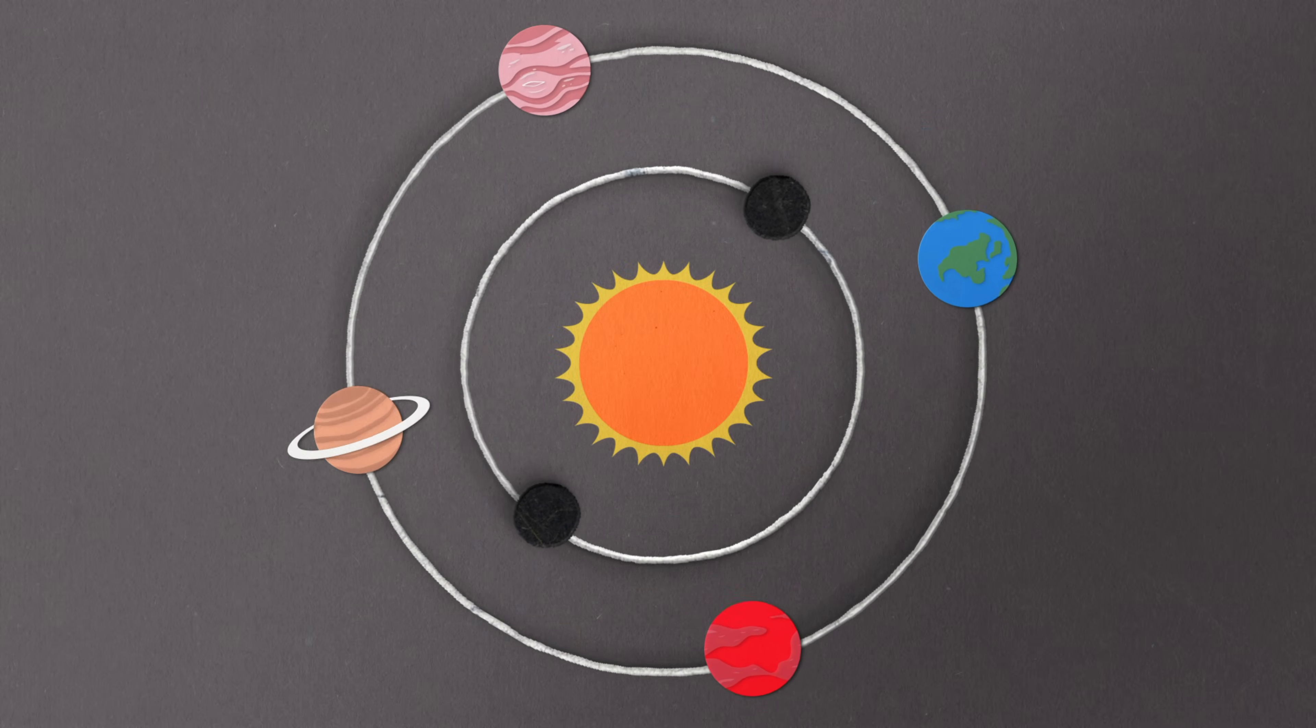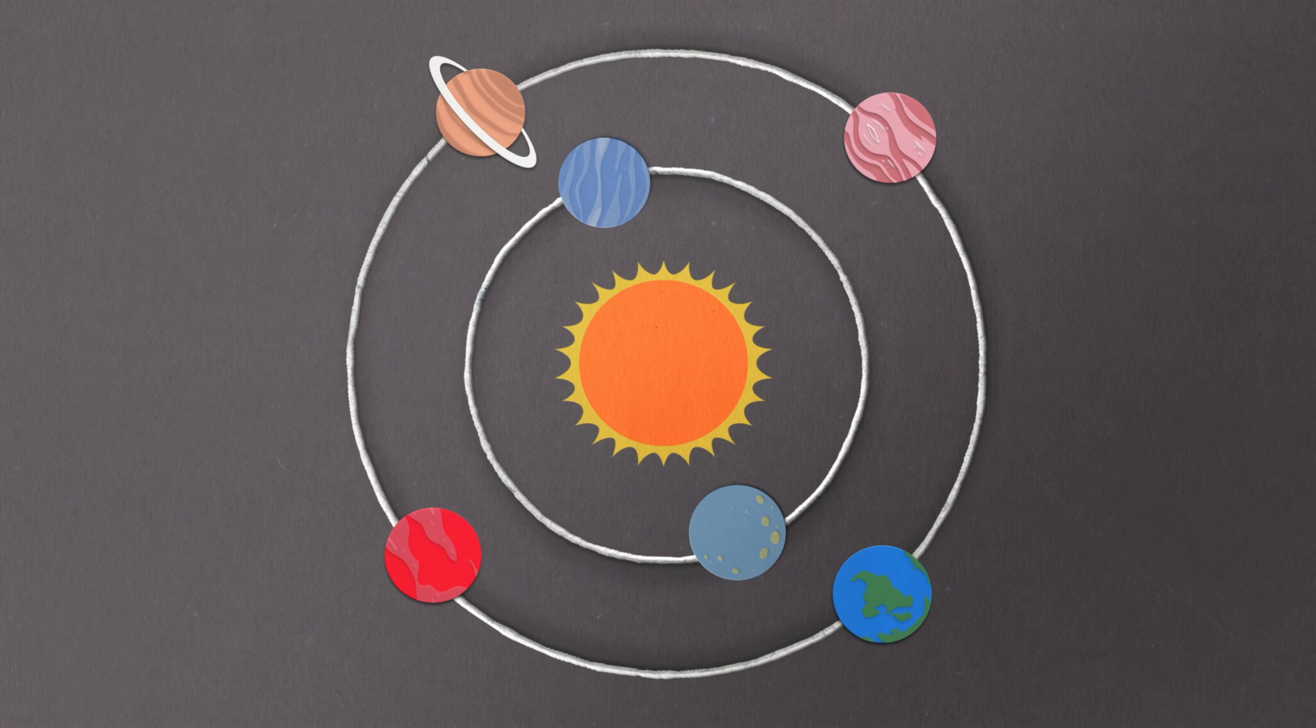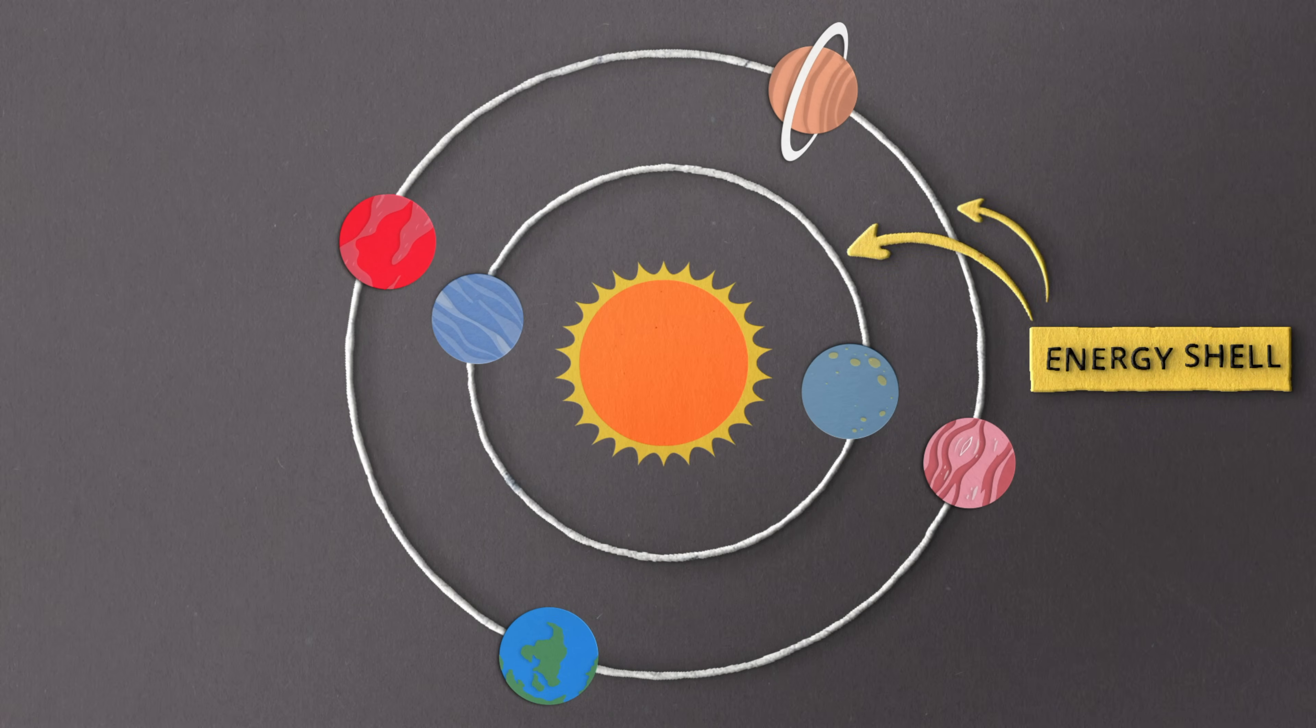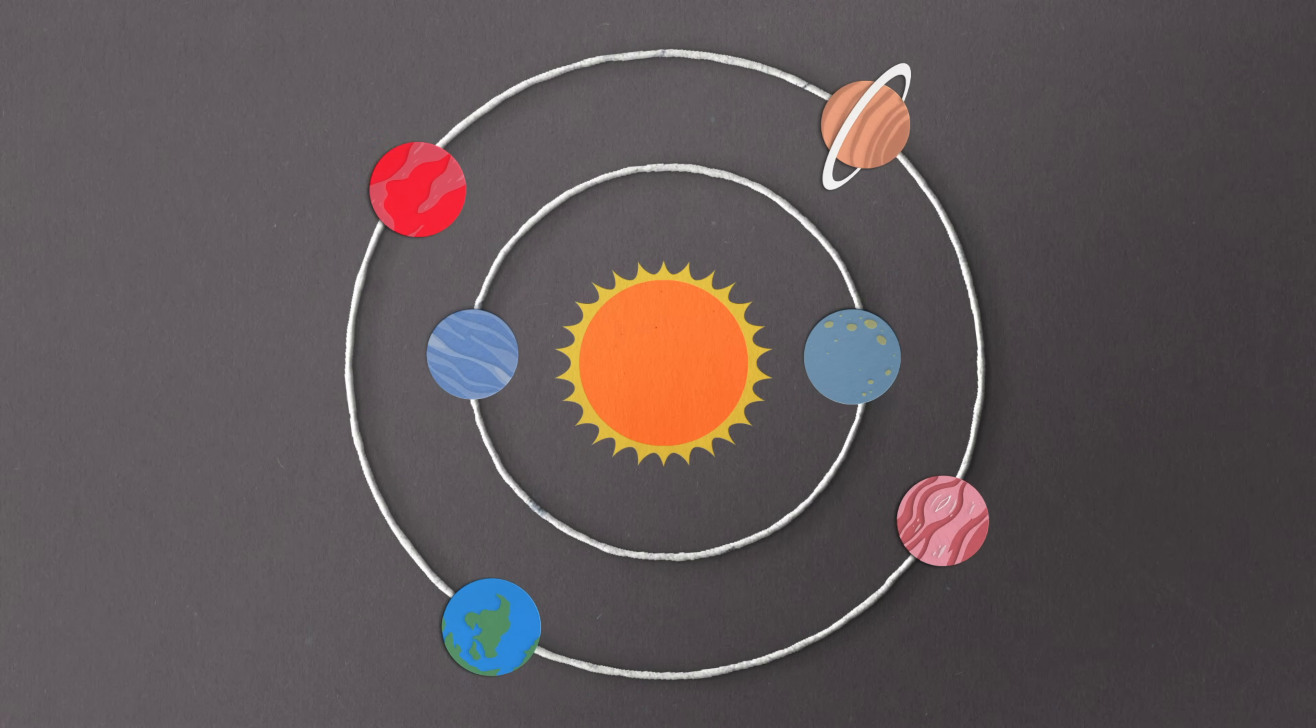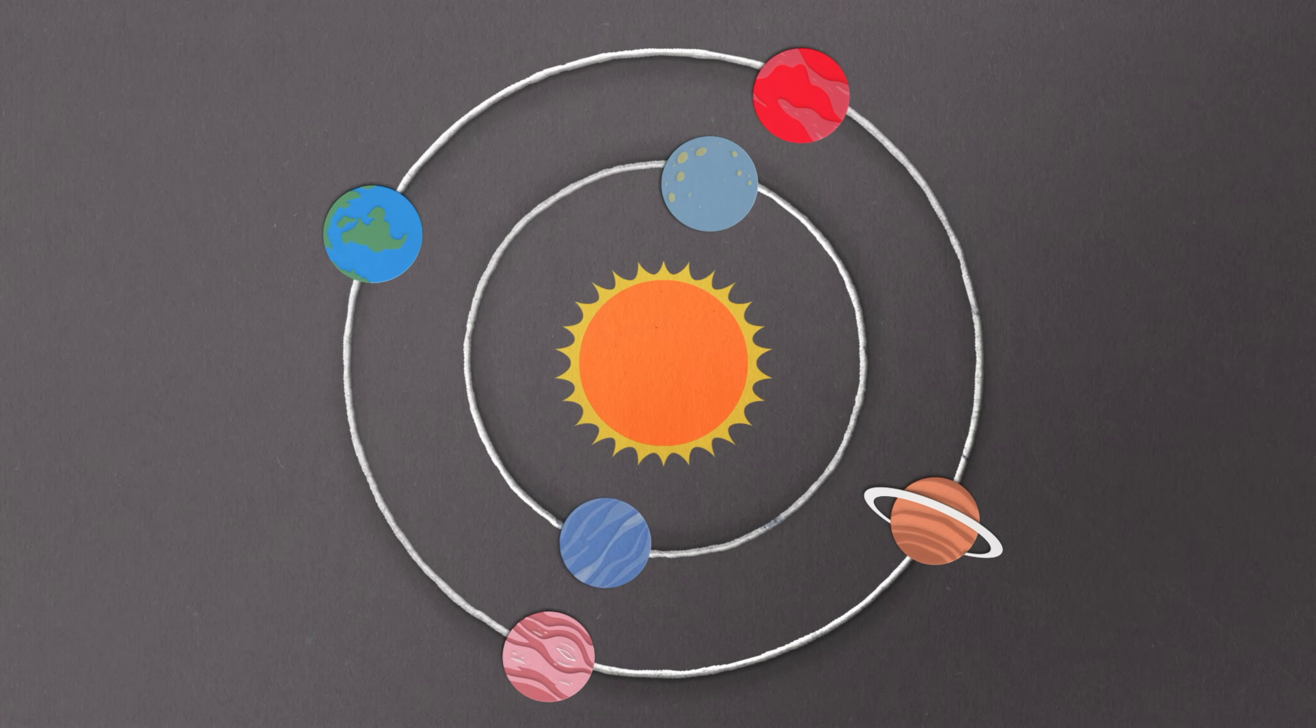Electrons orbit the atom's nucleus, like planets orbit the sun, at various distances from the nucleus. We call these orbits energy shells. The number of energy shells that a particular atom has depends on its number of electrons.